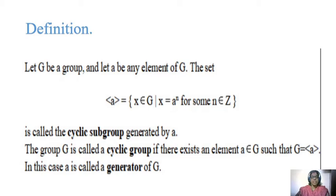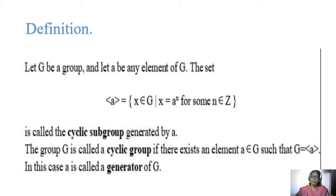Here A is a generator, written with angle bracket notation. The group G is called a cyclic group if there exists an element A belonging to G such that G equals the generator bracket A. That bracket specifies that A is a generator of G. Every element of the group is generated by that element A only.